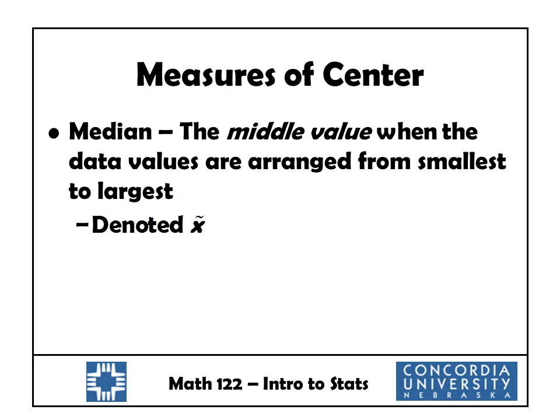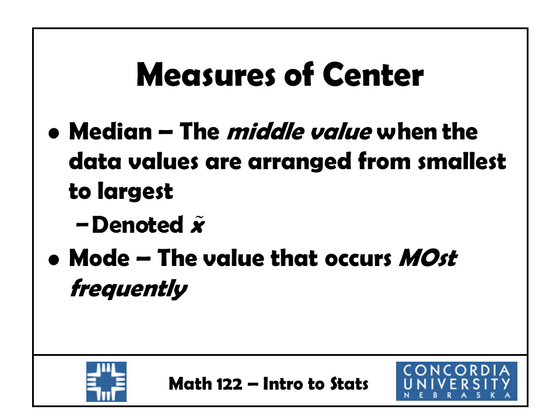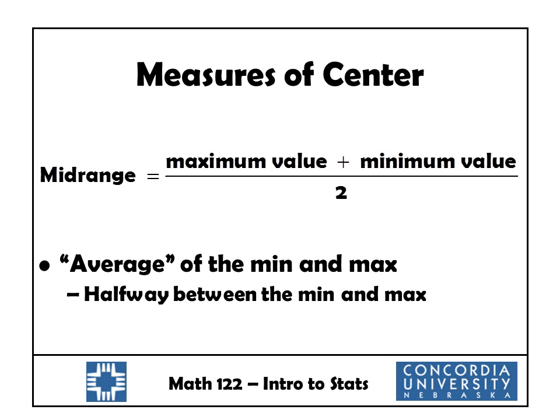The median is the middle value when the data values are arranged from smallest to largest — pick the one right in the middle. It's denoted by x-tilde. The mode is the value that occurs most frequently. The midrange is calculated by taking the maximum value, adding the minimum value, and dividing by two — it's halfway between the minimum and maximum values.